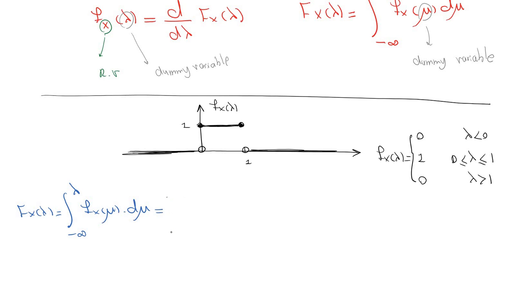So we have three conditions. For the first part, it's from minus infinity to zero, so the value is zero. That is integral from minus infinity to zero of zero d mu, that is zero.